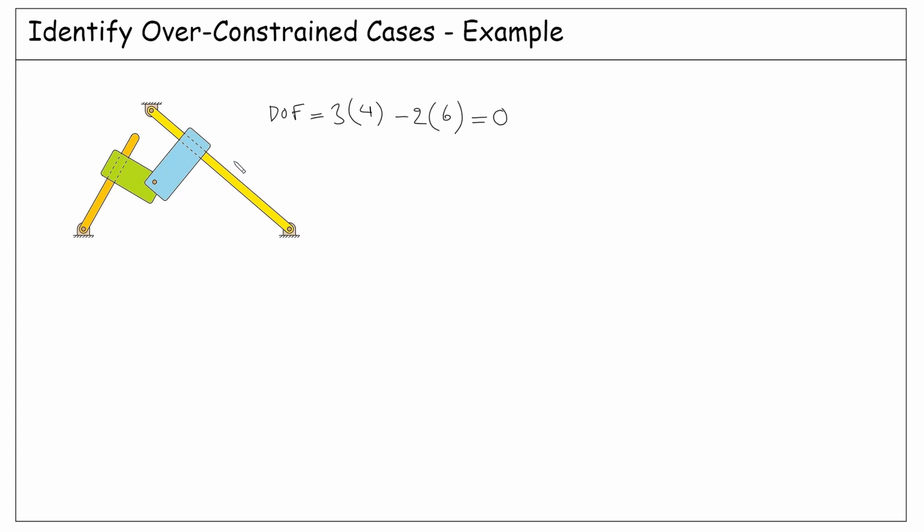What do you think went wrong? The problem is here. This link is connected to the ground with two pins. In fact, this first pin takes 2 degrees among the 3 degrees that this link brings. The second pin can take only the remaining rotation, so it takes only 1 degree instead of 2. Therefore, the degrees of freedom of the system is 1 instead of 0.